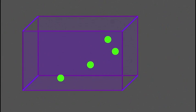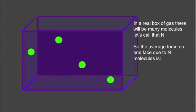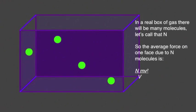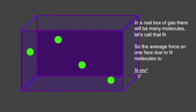Now, of course, we expect that there are a large number of molecules in the box, all going backwards and forwards. We don't know what that number is, so we'll give it simply the symbol capital N. So the force on one face due to N molecules bouncing backwards and forwards will be Nmv squared over V.